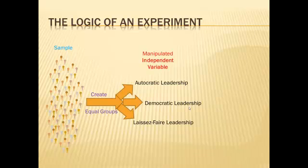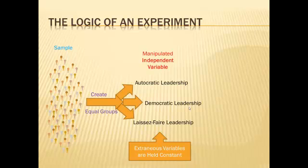The conditions we set up are our independent variable — this is what the researcher is manipulating. In the case of Lewin, Lippitt, and White, they were manipulating the leadership style that the men directing these groups of school-age children used. Some groups were exposed to an autocratic leader, some to a democratic leader, and others to a laissez-faire leader. When thinking about cause and effect, which is usually why we do an experiment, the independent variable is what we think of as the cause.